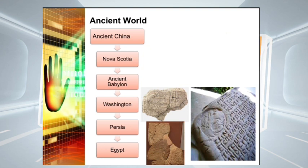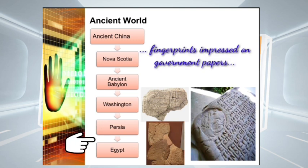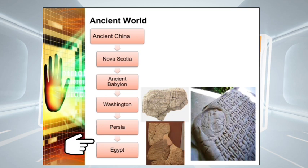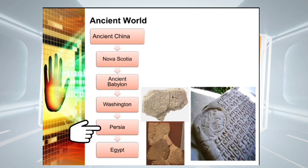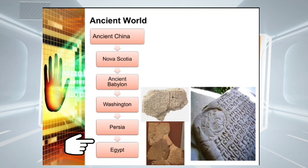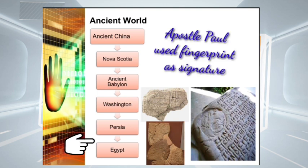In Persia during the 14th century, various government papers were reportedly impressed with fingerprints, and a government official who was also a physician made the observation that no fingerprints of two persons were exactly alike. Furthermore, in Egypt, there has been reported evidence of a small portion of palm print found in hardened mud. Likewise, in the Bible, some inferred that Apostle Paul used his finger impression as a distinctive signature.